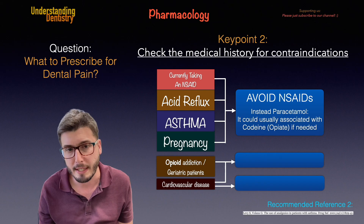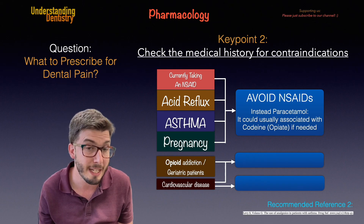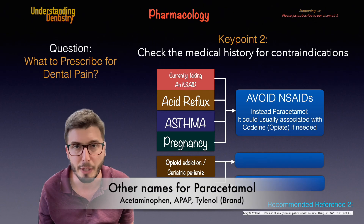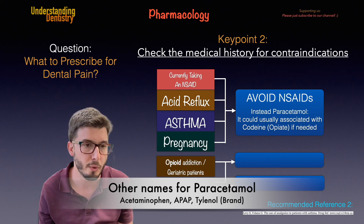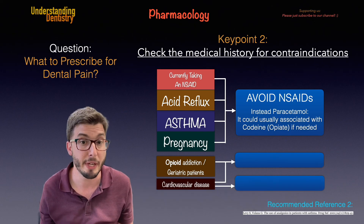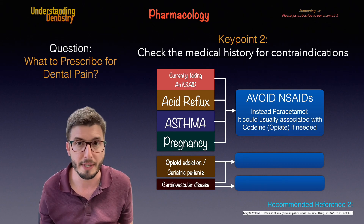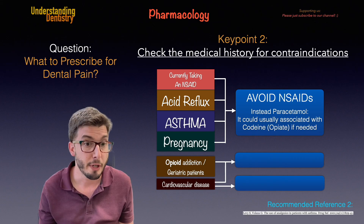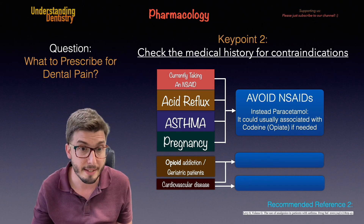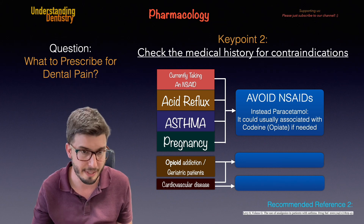In those contraindicated cases, we usually use paracetamol to control pain — note it may also be called acetaminophen or APAP in articles. If needed, paracetamol can also be associated with an opiate like codeine in cases of severe pain.